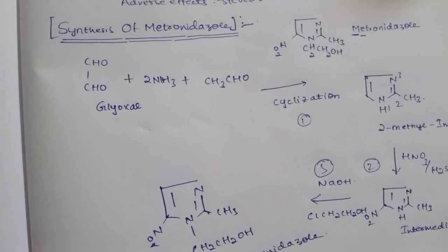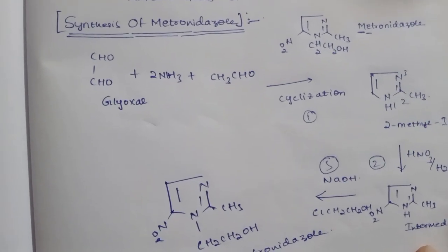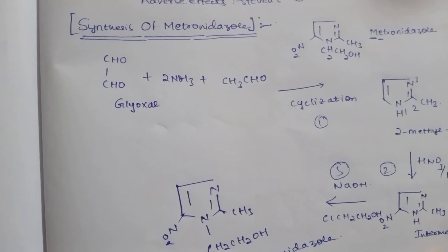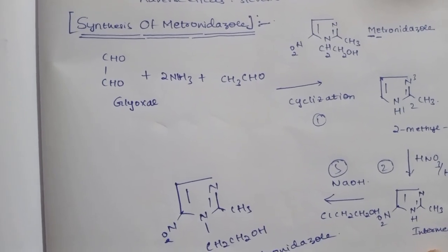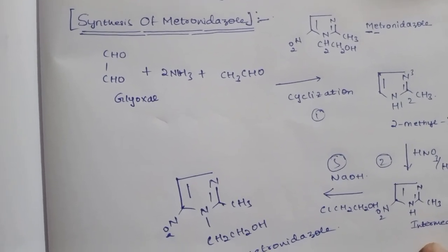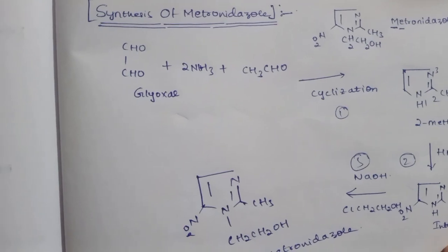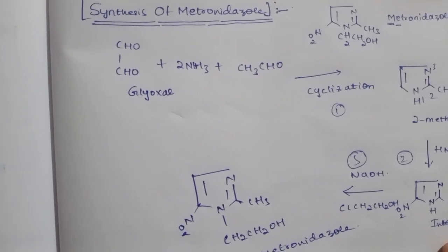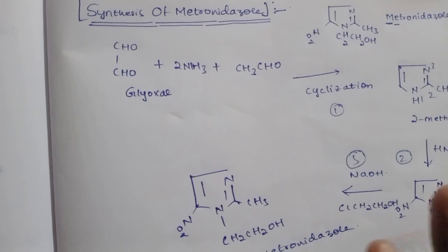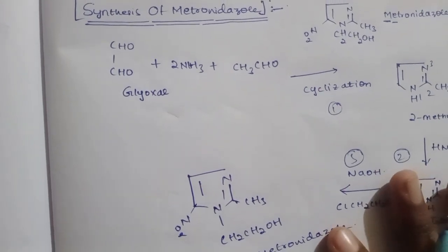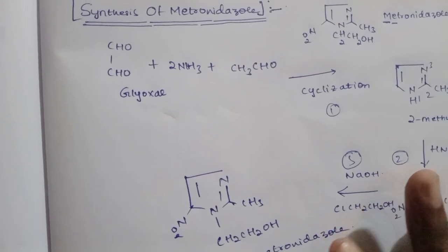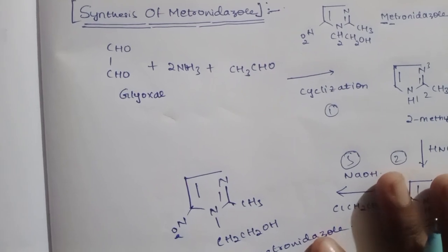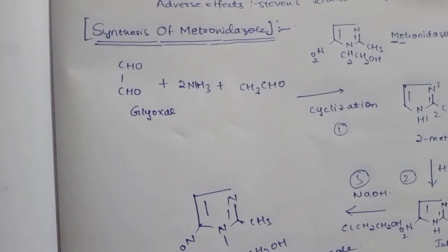The mechanism of action of metronidazole is that it inhibits nucleic acid synthesis by disrupting the DNA of cells. By inhibiting nucleic acid synthesis, DNA formation is also inhibited. Importantly, this activity is only against anaerobic organisms, which is why it does not show any toxic effect in our body.